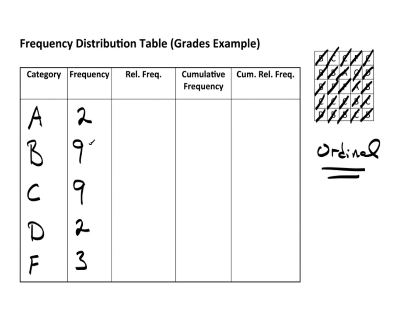If I add these up, two, nine, nine, two, and three, that should be twenty-five. This is N. This is my total number.